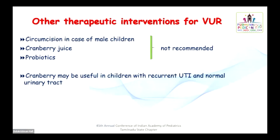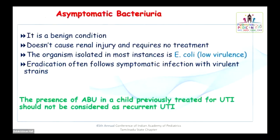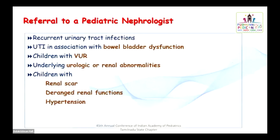Other therapeutic interventions: Routine circumcision in male children, cranberry juice, or probiotics are not routinely recommended. However, in children with a normal urinary tract and recurrent UTI, cranberry may be useful based on recent evidence. Asymptomatic bacteriuria is a benign condition — it does not cause renal injury and requires no treatment. The organism is usually E. coli. The presence of asymptomatic bacteriuria in a child with previously treated UTI should not be considered as recurrent UTI.